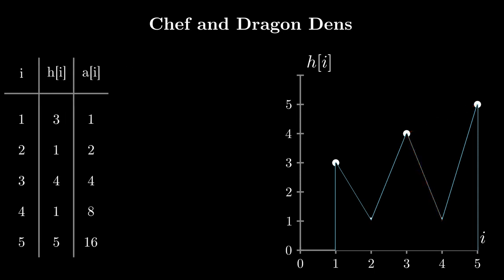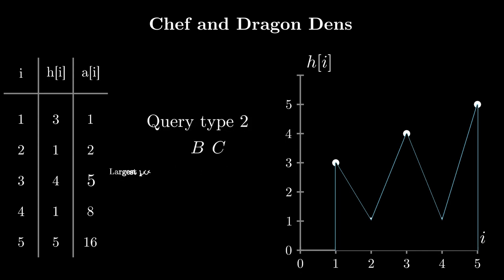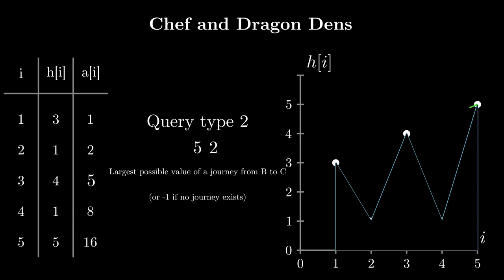In our task, we are given two types of queries. The first type consists of two integers b and k, which changes the value of a[b] to k. So if our query of type 1 was 3 and 5, a[3] would become equal to 5. The second type consists of two integers b and c — we need to find the maximum value of a journey from b to c, or print -1 if such a journey does not exist. If b equals 5 and c equals 2, the maximum value journey would be from 5 to 3 and then from 3 to 2, giving us a[5] + a[3] + a[2] = 16 + 5 + 2 = 23.